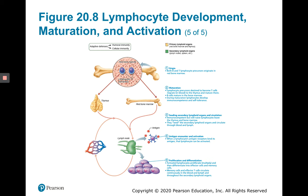Both B and T lymphocytes originate in the red bone marrow. The thymus is the location for maturation of T cells, whereas the red bone marrow is the location for maturation of B cells. Secondary lymphoid organs include lymph nodes and the spleen, and seeding secondary lymphoid organs increases the chance that naive immunocompetent T and B cells will encounter their one specific antigen.